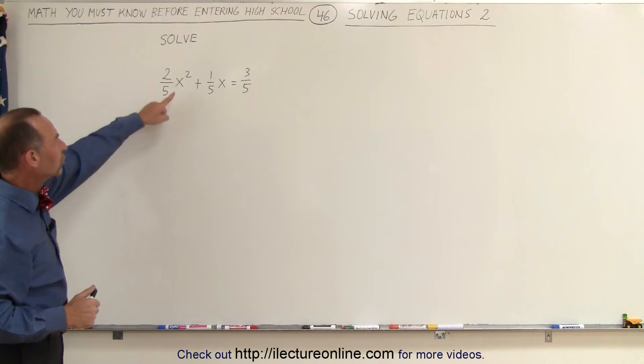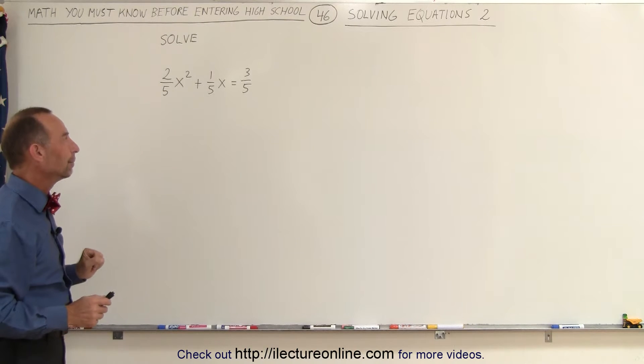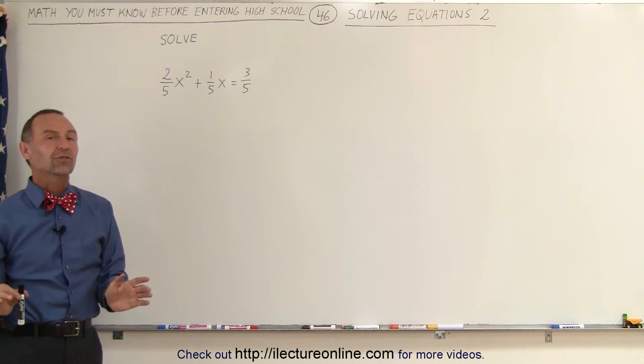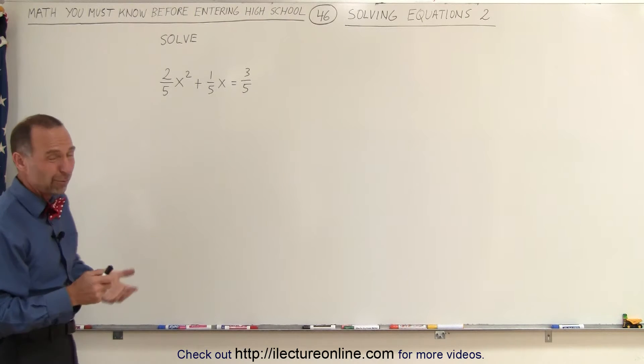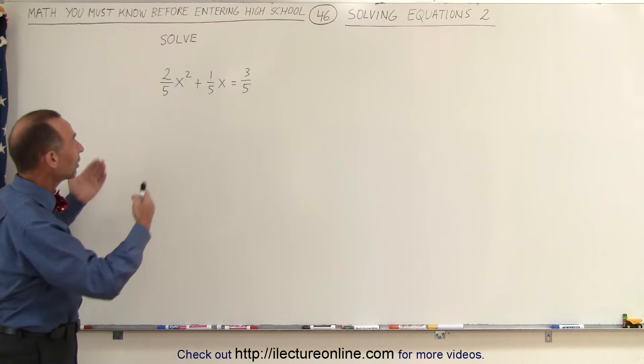Notice also that this is a quadratic equation because it has a square term, x to the second power. It also has fractions. And whatever type of equation we have, the first thing we should always do is get rid of parentheses, decimals, and fractions.